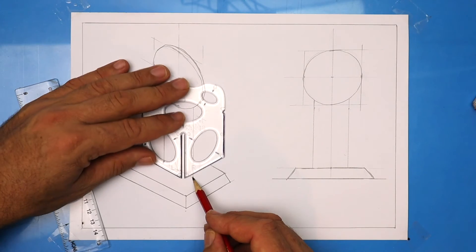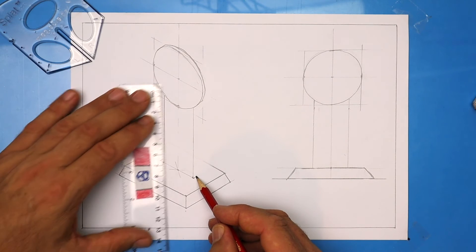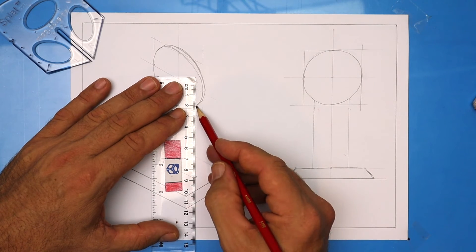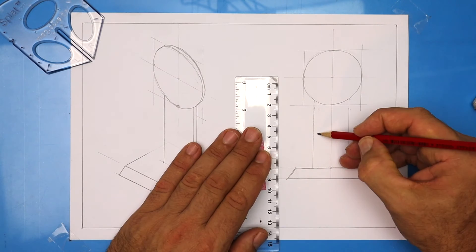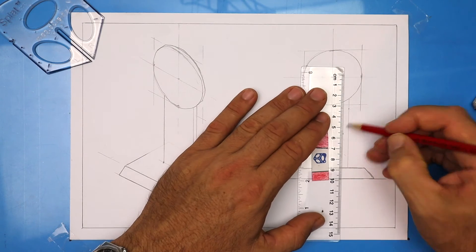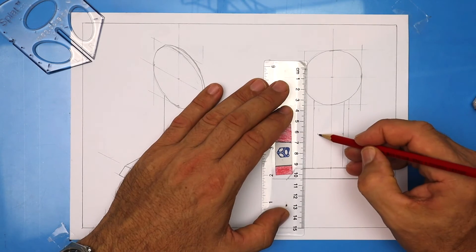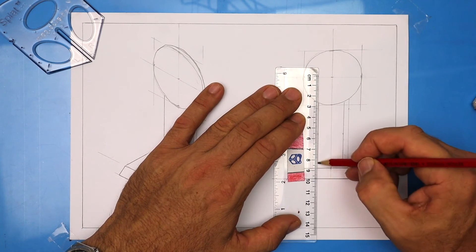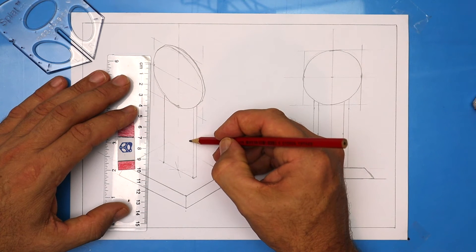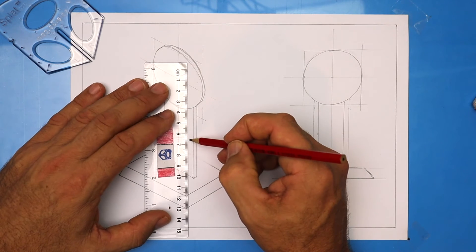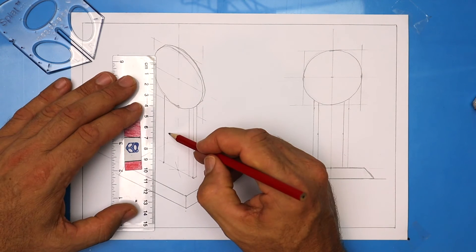To give it some thickness, I'm coming back 3mm and then another vertical line. Alright, you're doing great. Let's try to draw an insert. So a little piece that goes inside. Decide on your measurement and then mark in your vertical line.